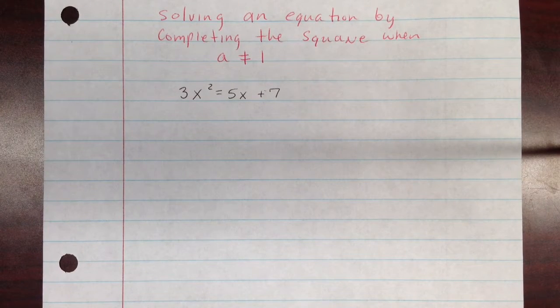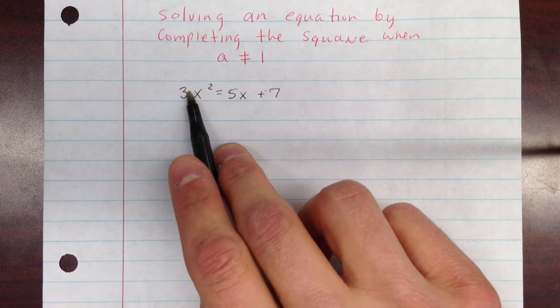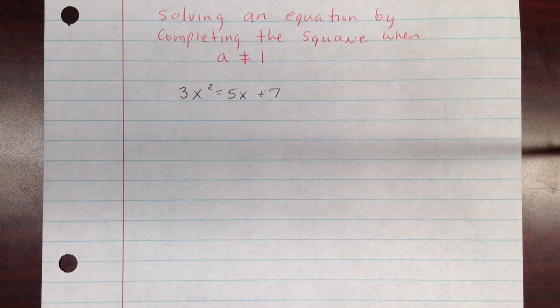The other example I have, a is equal to 1. A is the coefficient of the square term. In this case, a is 3. Before we solve this, we have to do one extra step if it's not equal to 1.